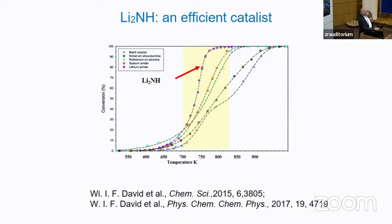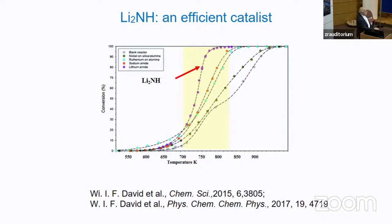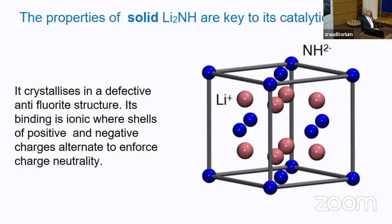These measurements show the conversion over different and compare different catalysts. Some are really standard, like ruthenium, but lithium imide is a totally different catalyst and it's clearly more efficient than the others — although you also have to go to 700 Kelvin to have significant activity.